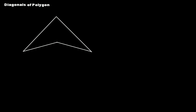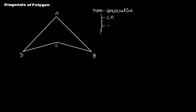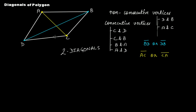Now look at this figure — it's a quadrilateral, a four-sided polygon. If you name all the vertices A, B, C, and D, you can see there are only two pairs of non-consecutive vertices: C and A, and B and D. Just two pairs, as we discussed earlier for quadrilaterals, which is why any quadrilateral will always have only two diagonals.